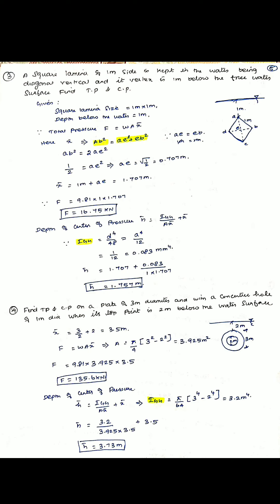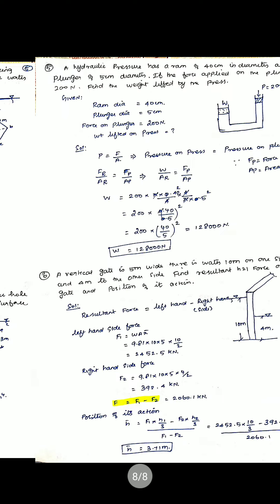Problem 4: find the total pressure and center of pressure on a plate of 3 meter diameter with a concentric hole of 1 meter diameter, with its top point 2 meter below the water surface. x̄ = 3/2 + 2 = 3.5 meter. Area = π/4 × (3² − 1²) = 3.925 m². Force = 135.6 kilonewton. For depth of center of pressure, I_GG = π/64 × (3⁴ − 1⁴), giving x̄ = 3.73 meter.